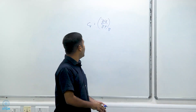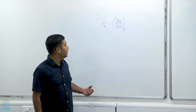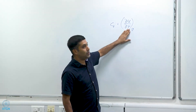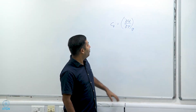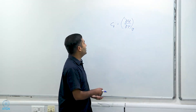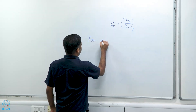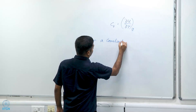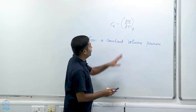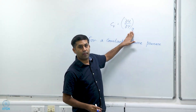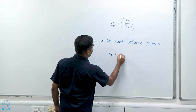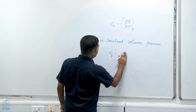Now supposing that I have a constant volume process. This partial derivative exists because u in general is a function of T as well as some other variables. But if I do have a constant volume process, I can remove this constraint because anyway the volume is constant, and I can write Cv simply as du/dt.